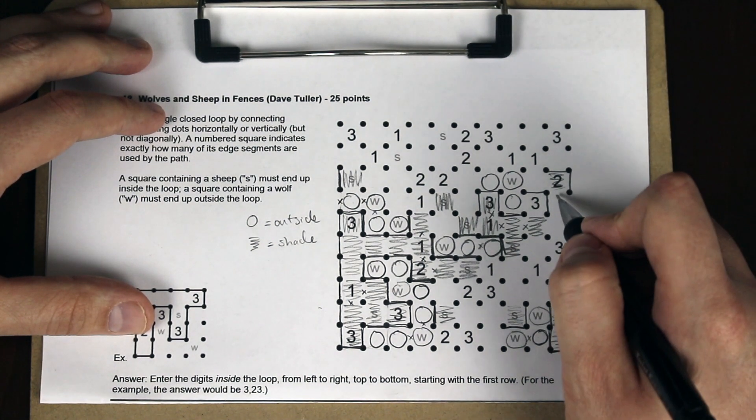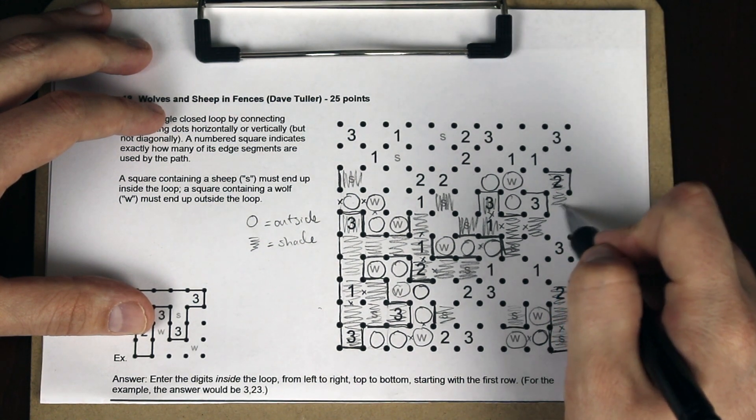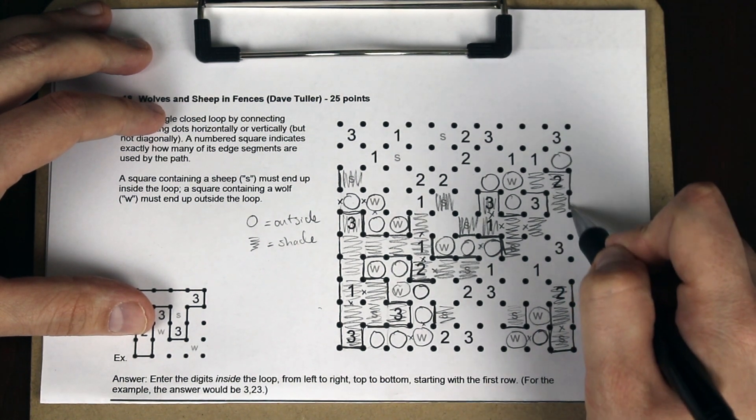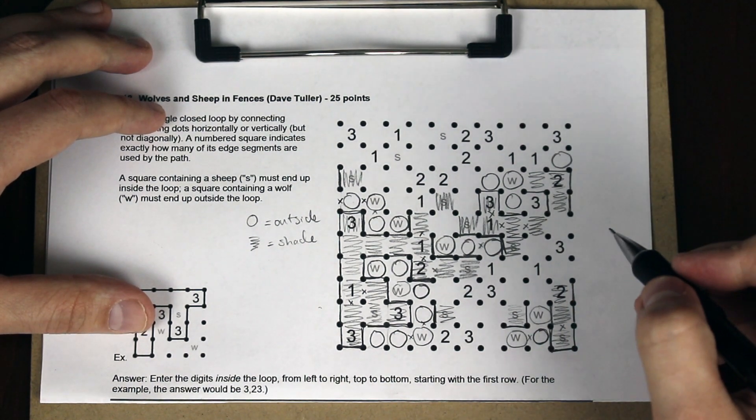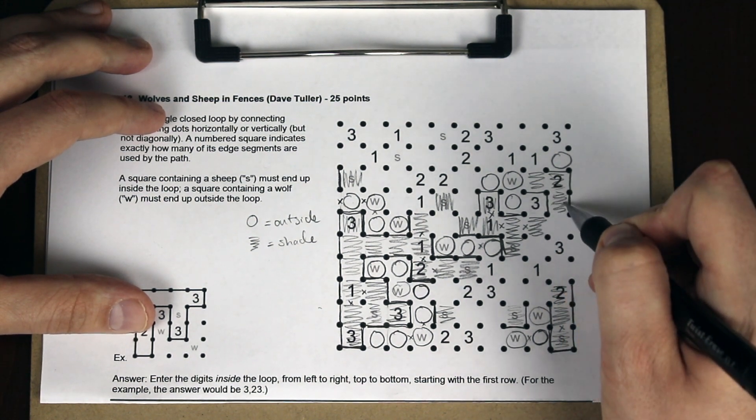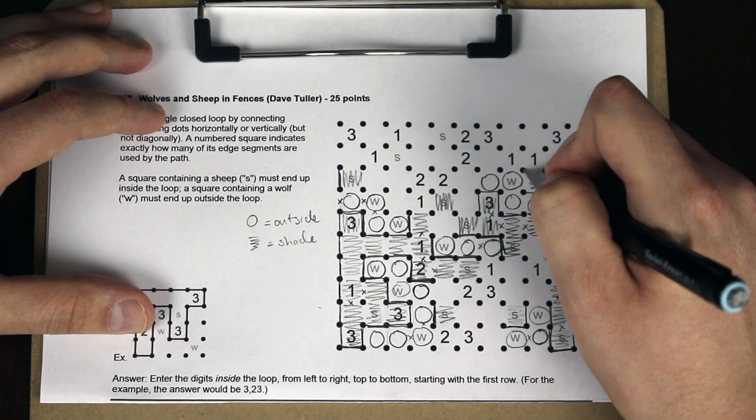This is inside the loop. This is outside the loop. And this must be outside the loop, because it's a line away from something that's inside the loop. Which tells us how that three goes.